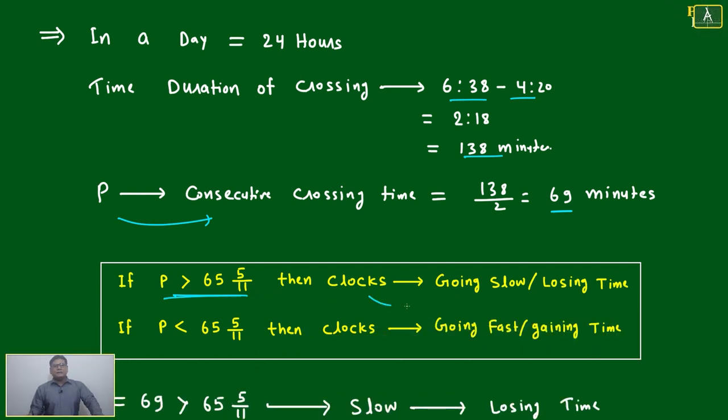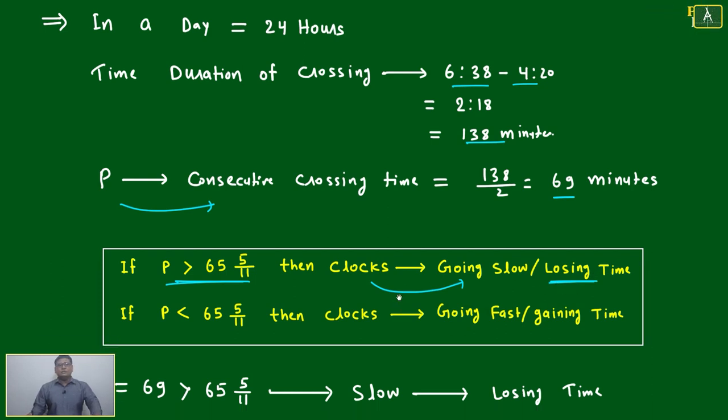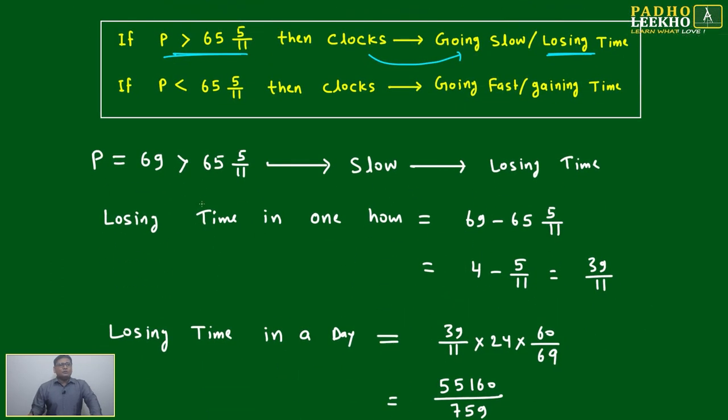What will happen? Clocks are going slow, they are losing time. How much will they lose? We'll just take the difference. 69 is greater than this, so it is slow, losing time: 69 minus this.